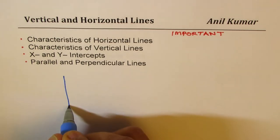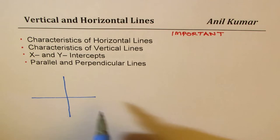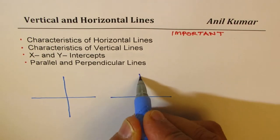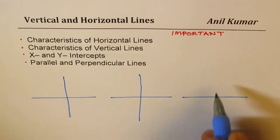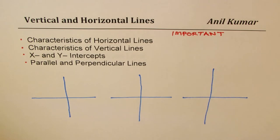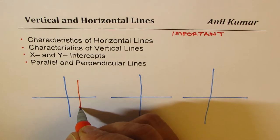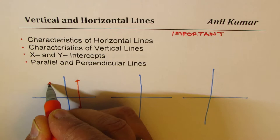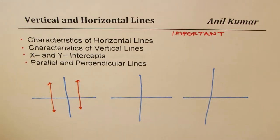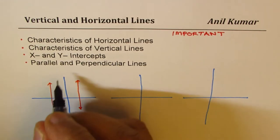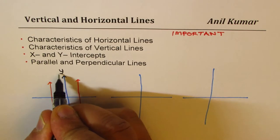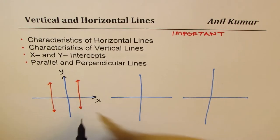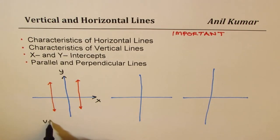Let me give you some examples before we get into details of vertical and horizontal lines. When I say vertical lines, it really means a line which is parallel to the Y axis. So these are vertical lines — they are parallel to the Y axis, while the horizontal X axis runs across.